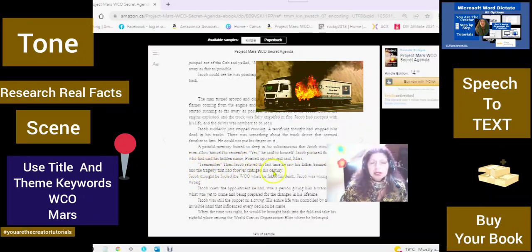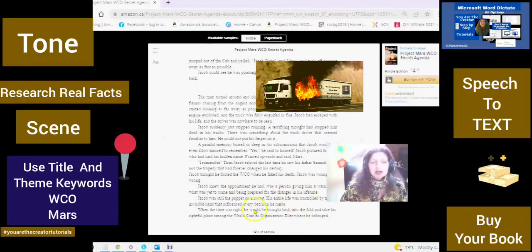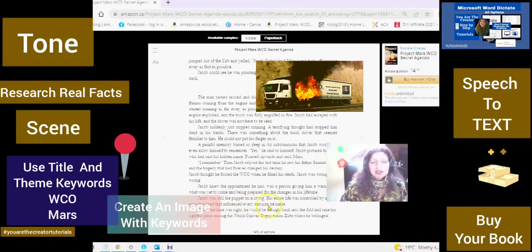I remember. Then Jacob relived the last time he saw his father Samuel alive and the tragedy that had forever changed his destiny. Jacob thought he fooled the WCO. There I am using the WCO from my title again when he faked his death. Jacob was wrong, dead wrong. Jacob knew the appointment he had was a person giving him a warning of what was yet to come and being prepared for the changes in his lifetime.